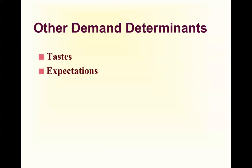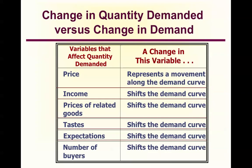Now let's review quantity demanded versus a change in demand. Price causes a movement along the demand curve. Income causes a shift. Price of related goods causes a shift. Tastes cause a shift. Expectations cause a shift. Number of buyers also causes a shift.